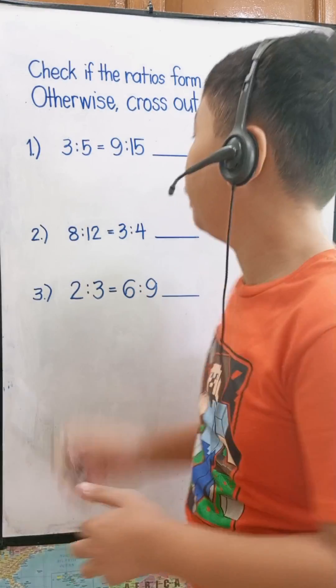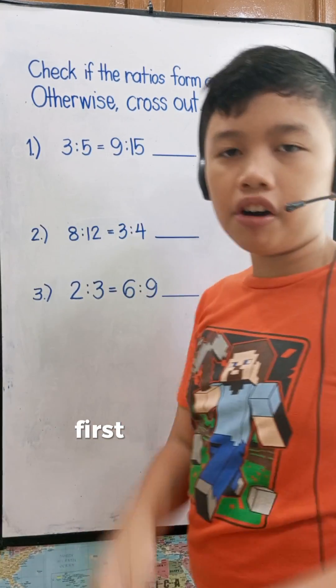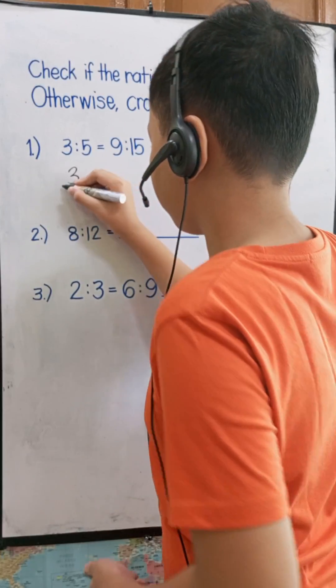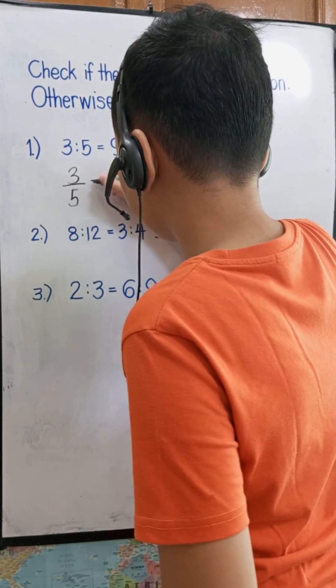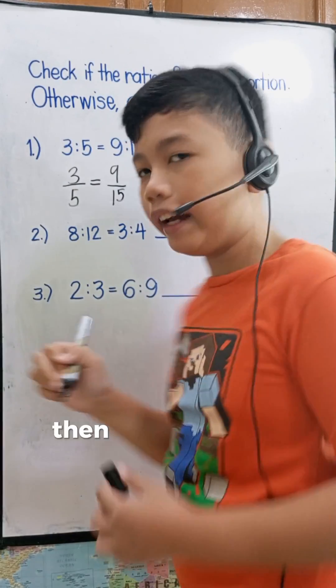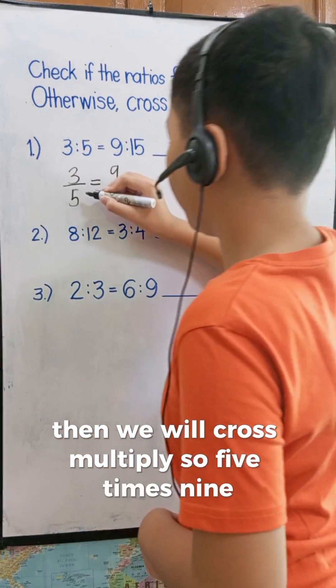So let's go to number one: three is to five equals nine is to fifteen. First I'm gonna transform this into fractions, then we will cross multiply.